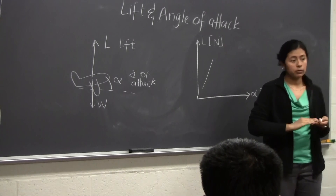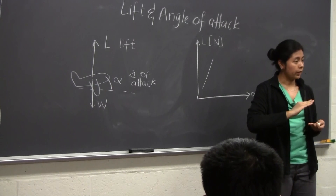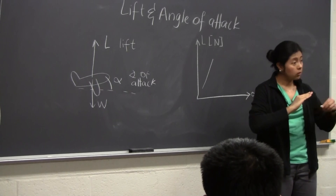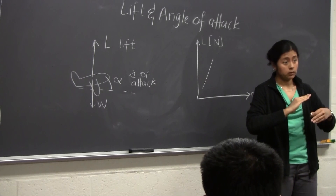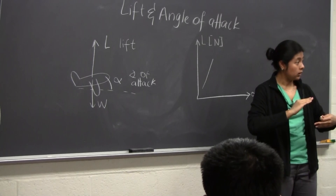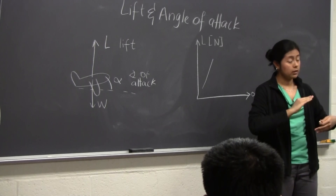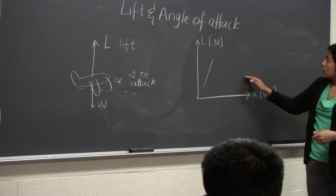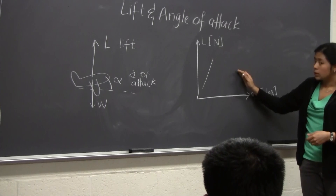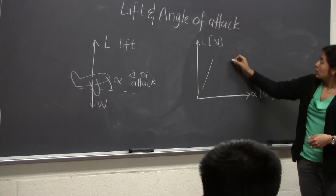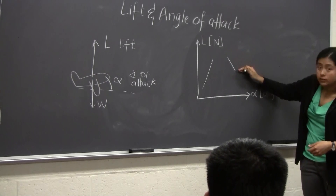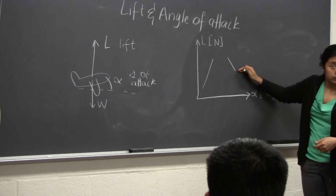Now, imagine that you have a very high angle of attack — that the plane is going really steep. The flow is going to be quite adverse to the wings, and they're going to start losing lift. So if you make the angle even steeper, you're going to get even less lift. That means that in this part of the plot, at very high angles of attack, lift decreases as you increase the angle.